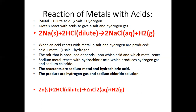Metal reacts with Acid to give a Salt and Hydrogen Gas. Here you see Sodium when reacted with Hydrochloric Acid gives NaCl and H2. When an Acid reacts with Metal, a Salt and Hydrogen are produced. The Salt produced depends upon which Acid and which Metal reacts. The reactants are Sodium Metal and Hydrochloric Acid, and the products are Hydrogen Gas (H2) and Sodium Chloride (NaCl).